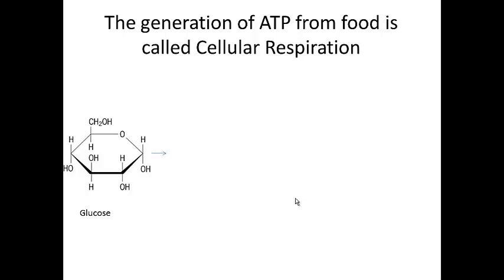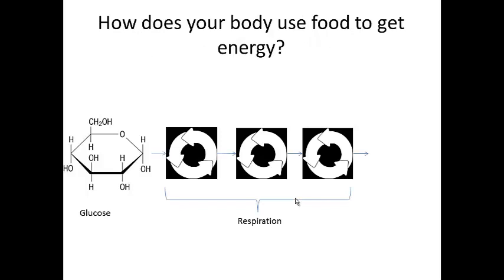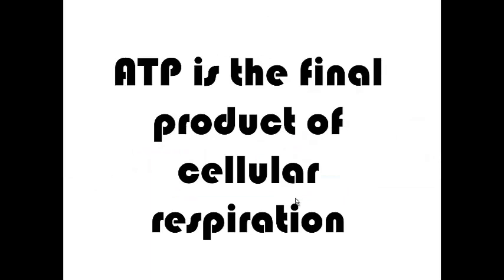The generation of ATP from food is called cellular respiration. So this process of going from glucose to ATP is cellular respiration. Within respiration, there are three different cycles, and within each of these cycles there are several different chemical reactions that take place. We don't want to get hung up on those details right now. I just want you to be thinking about how you take glucose, you go through respiration, and you produce ATP. ATP is the final product of cellular respiration.